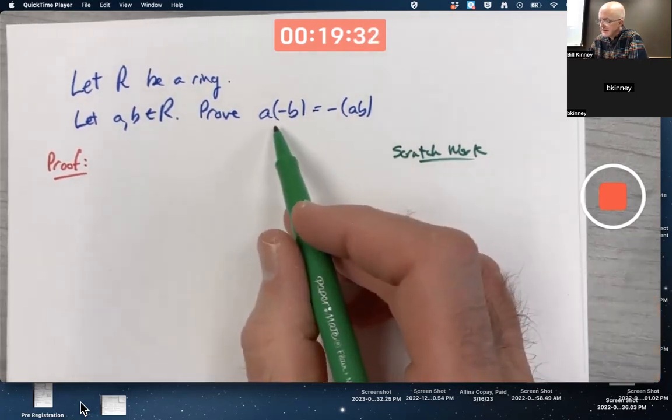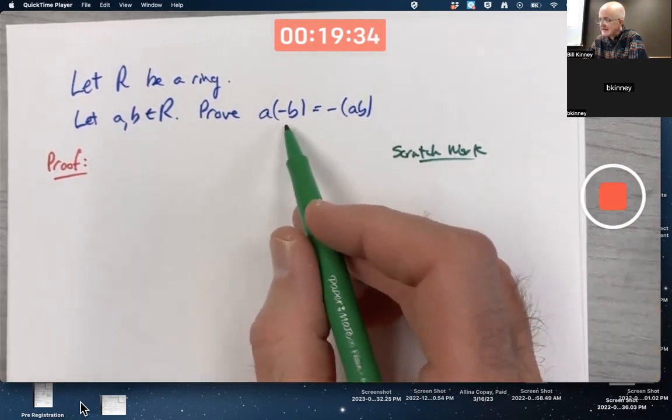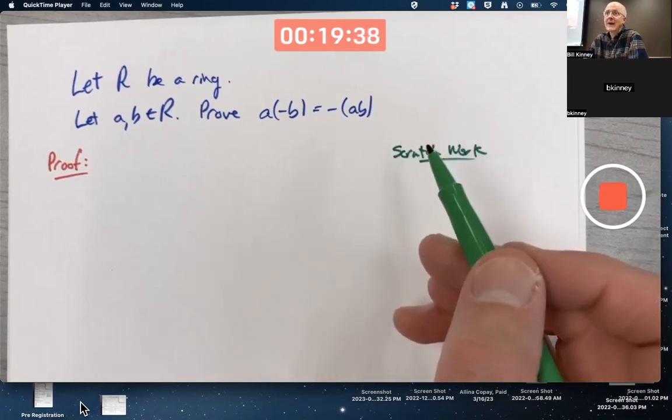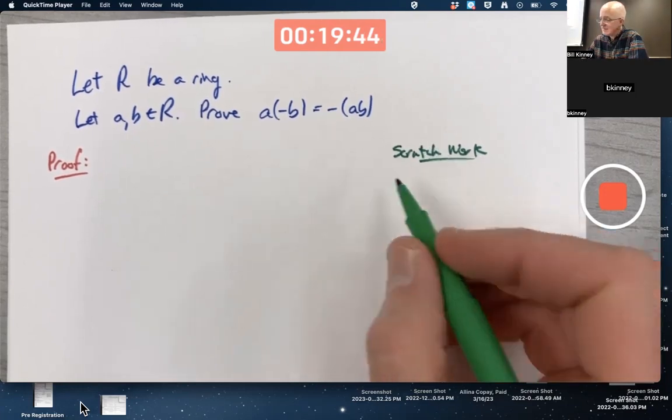So you're trying to show ultimately that A times negative B is the additive inverse of AB. What does that mean? It means if I add it to AB, I should get zero, right? Because that's what additive inverse means.